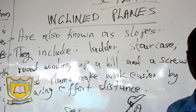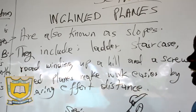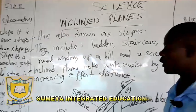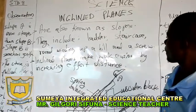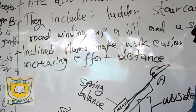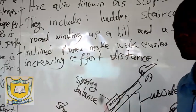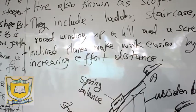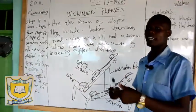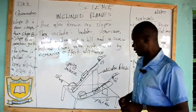Now, when we talk of the inclined plane, how do they make work easier? Because these are simple machines used to make work easier. Inclined planes make work easier by increasing the effort distance. When you increase the effort distance, you make work easier. But when you reduce the effort distance, the work being done becomes more difficult.